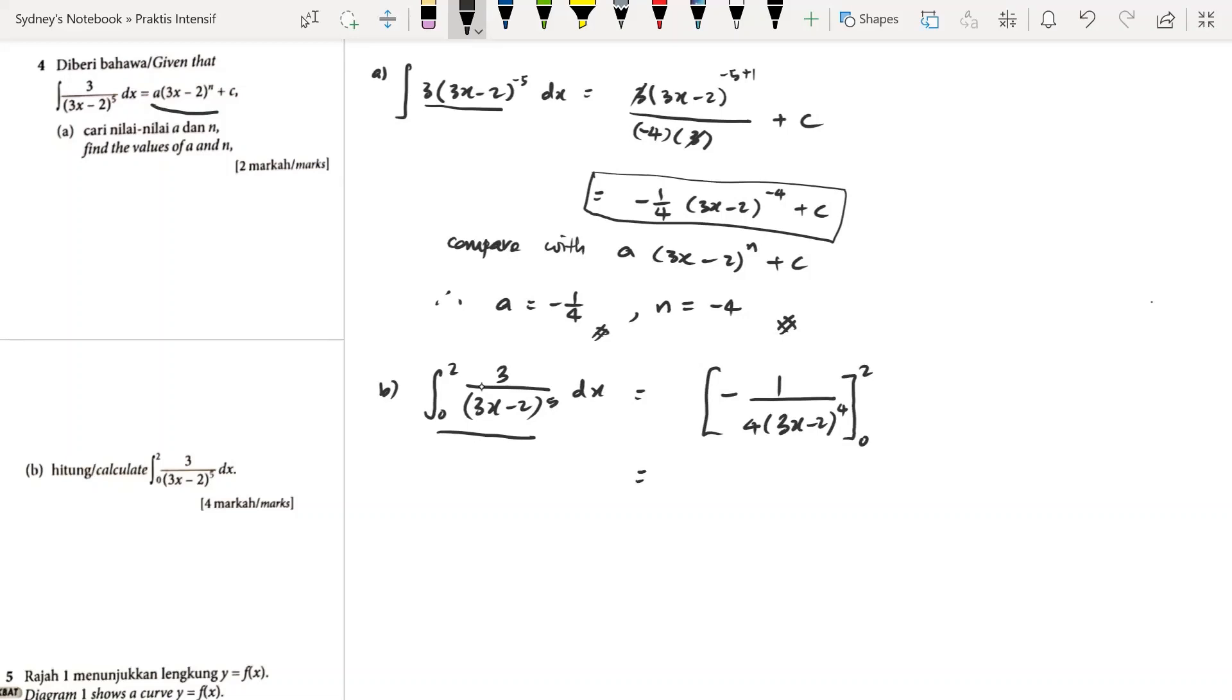Let's substitute the 2 in. We have negative 1 over 4. 3 times 2 is 6, 6 minus 2 is 4. So we have 4 to the power of 4 minus, for the same expression, we substitute the 0 in. So we have negative 2 raised to the power of 4.